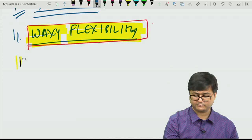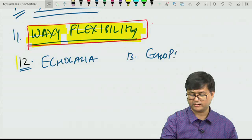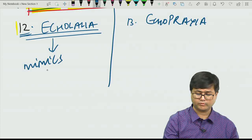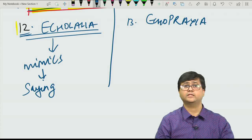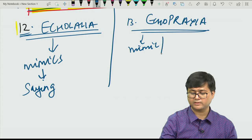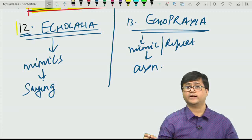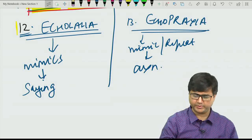Echolalia and echopraxia are also features of catatonia. In echolalia, the patient mimics what the examiner says — if asked 'what is your name?' the patient repeats 'what is your name?' In echopraxia, the patient mimics the examiner's actions — if the examiner writes, the patient mimics writing even without pen and paper.